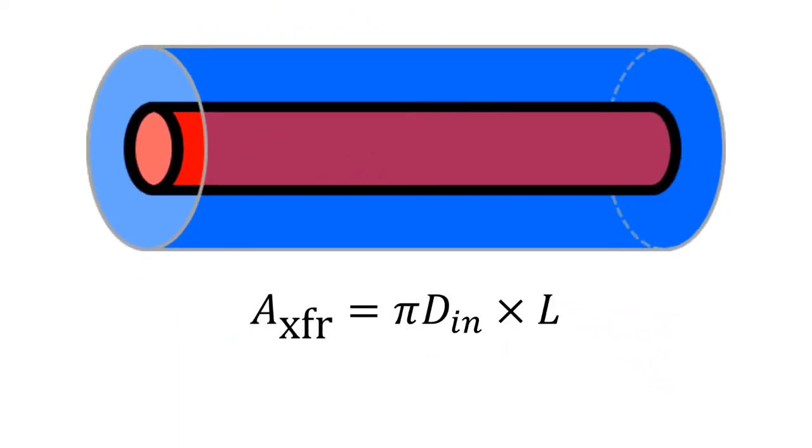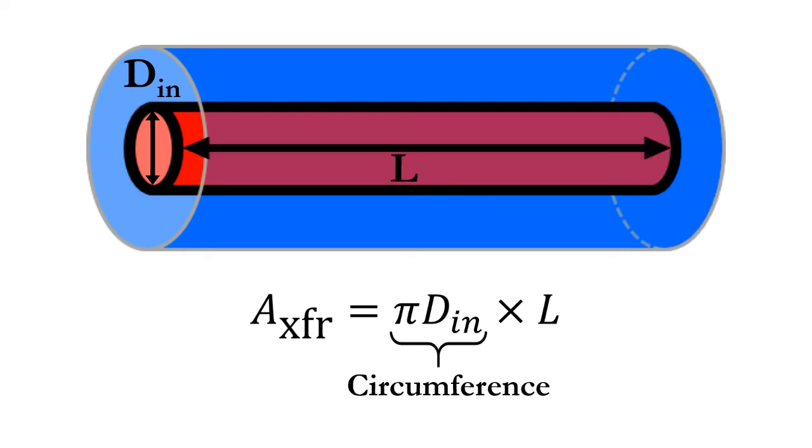The area for heat transfer is the circumference of the inner pipe multiplied by the total length of the pipe. Remember that we have four pipes of the same length in this heat exchanger, so we would need to multiply this equation by four if we use the length of a single pipe.